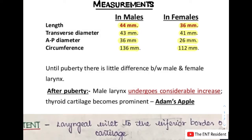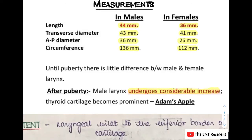Why does this difference exist? In children, the difference in dimensions of larynx in males and females are almost the same until about puberty. Because after puberty, the male larynx undergoes a considerable increase in size. The thyroid cartilage also becomes very prominent. There are a lot of changes happening during puberty, and this is the reason why the male larynx dimensions are way greater than that in females.